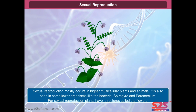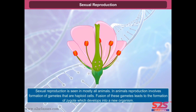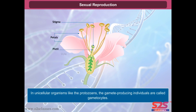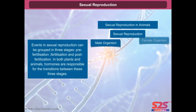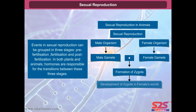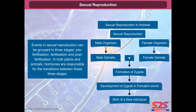For sexual reproduction, plants have structures called flowers. Sexual reproduction is seen in mostly all animals. In animals, reproduction involves formation of gametes that are haploid cells. Fusion of these gametes leads to the formation of a zygote which develops into a new organism. In unicellular organisms like protozoans, the gamete-producing individuals are called gametocytes. Events in sexual reproduction can be grouped into three stages: pre-fertilization, fertilization, and post-fertilization. In both plants and animals, hormones are responsible for the transitions between these three stages.